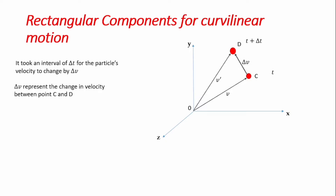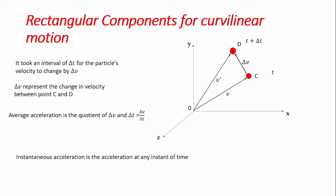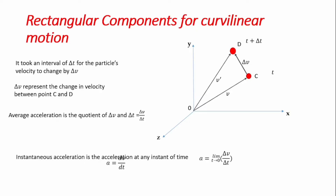The change Δv represents the change in velocity between points C and D. The average acceleration is the ratio of Δv and Δt. The instantaneous acceleration — the acceleration at any point in time — equals the limiting value of this average acceleration as time tends towards zero, so the instantaneous acceleration is the time derivative of velocity: a = v̇.